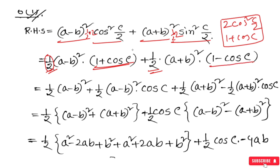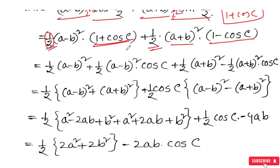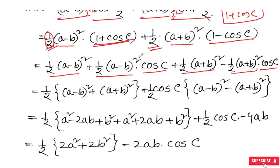1 plus cos C, C by 2. Here we can see (a plus b) whole square and (a minus b) whole square. Taking half of (a plus b) and half of (a minus b) whole — the cost issue on a half (a minus b) whole square and (a plus b) whole square terms.